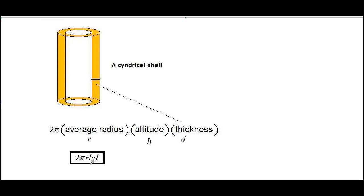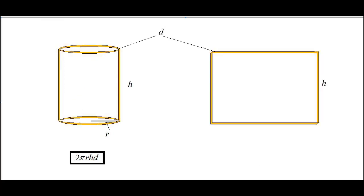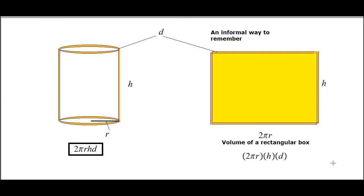An easy way to remember that is this: consider a very thin cylindrical shell. If you go ahead and unfold it, it looks like a rectangular box. So you can see that this rectangular box, its volume will be the length times the width times the altitude.